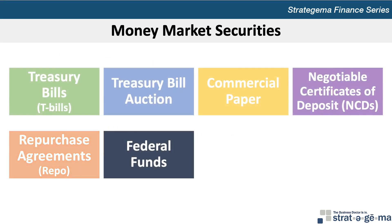The federal funds market enables depository institutions to lend or borrow short-term funds from each other at the federal funds rate. Commercial banks are the most active participants in the federal funds market. Federal funds brokers serve as intermediaries, matching financial institutions that wish to sell or lend funds with those that wish to purchase or borrow.